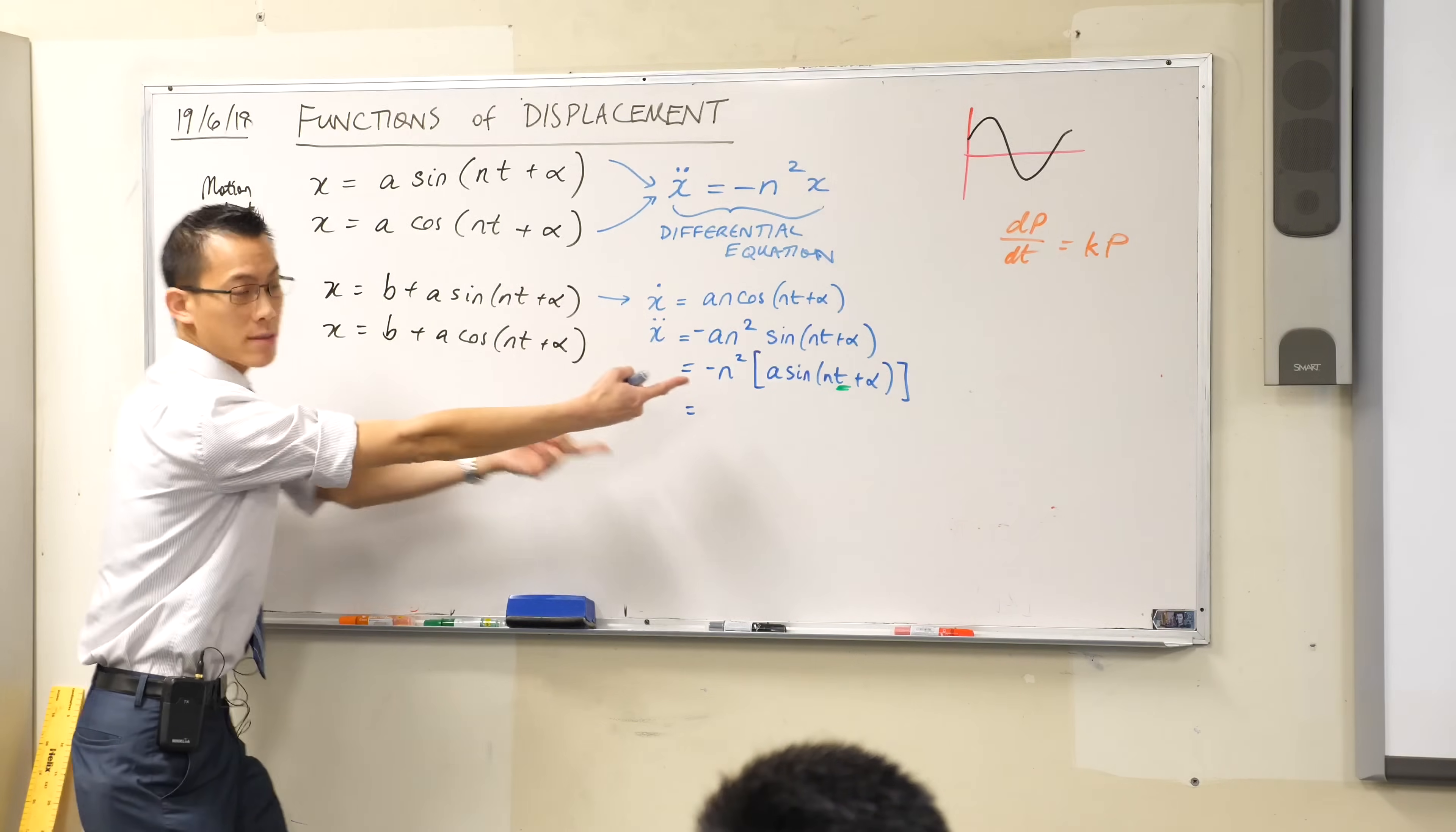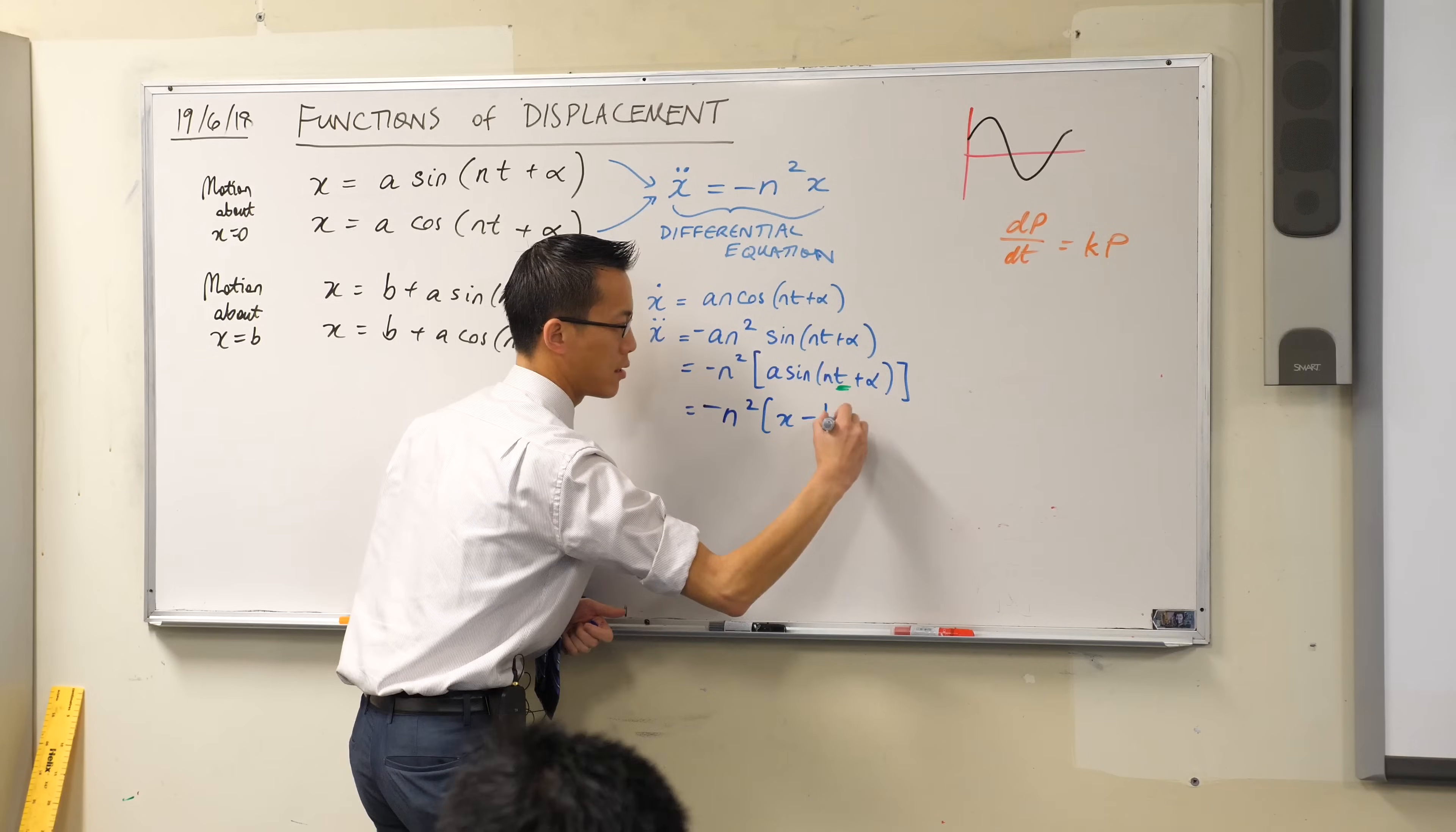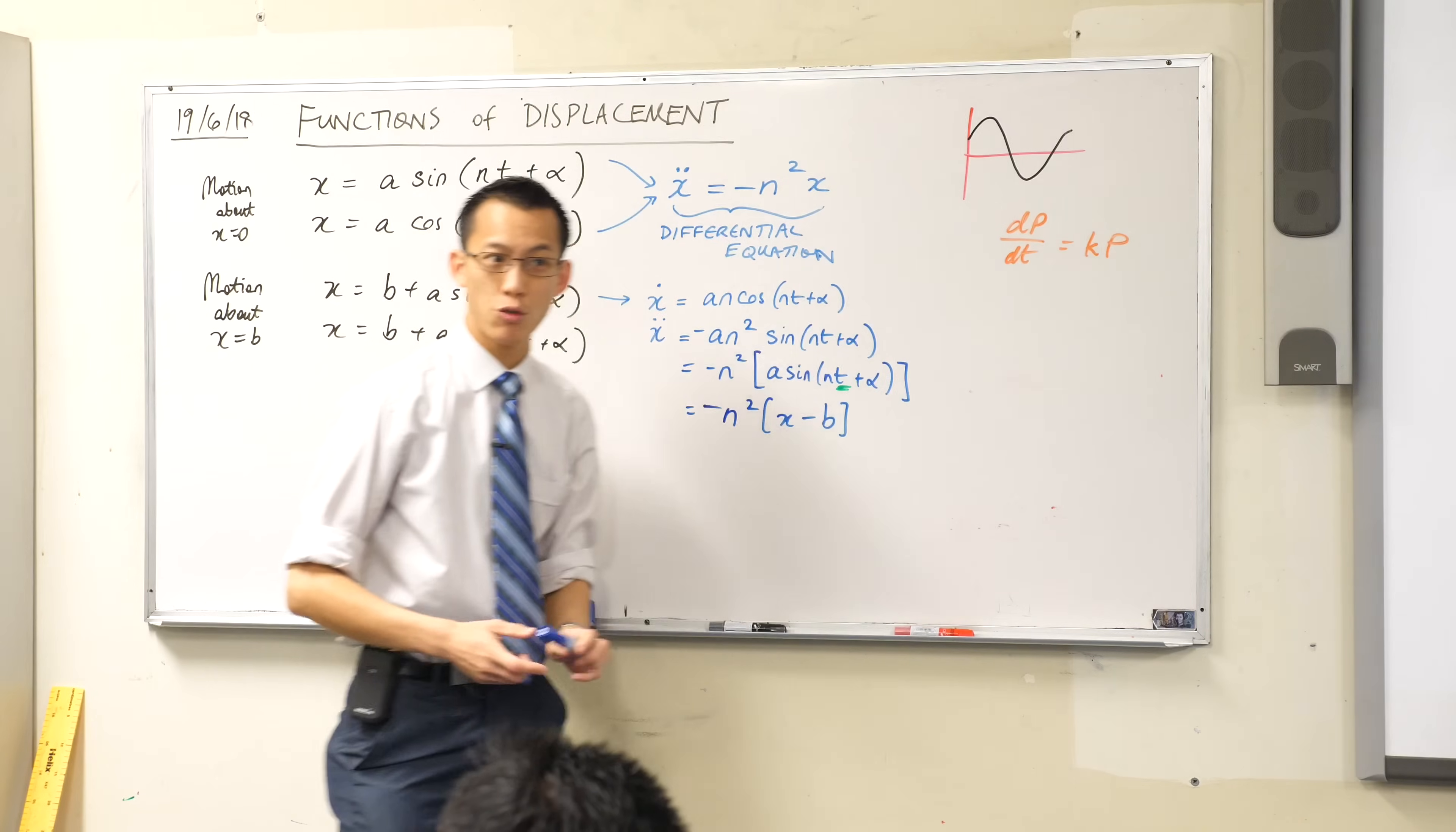Once you subtract that from both sides, that's what you have, right? So I've got this x minus b. Now I wonder if this rings a bell. Again, talking back to exponential growth and decay.